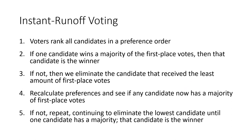Now let's talk about instant runoff voting. In this method, we again start with voters ranking candidates in a preference order. If one candidate has a majority of first place votes, that candidate wins. If not, we eliminate only the candidate with the fewest first place votes — just one at a time — then recalculate. We keep repeating, eliminating one candidate at a time, until one candidate has a majority.